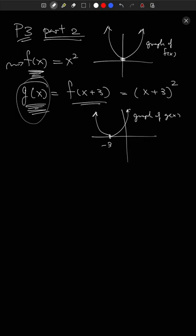Last time we said that replacing x with x+3 corresponds to shifting the graph to the left by three steps. So if this is the graph of f(x), then the graph of g(x) would be shifted to the left. And if it had been f(x-3), you would be shifting it to the right instead.